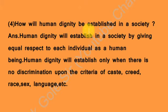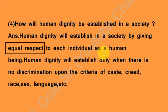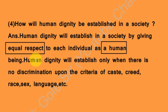Question number four: How will human dignity be established in a society? Human dignity will be established in a society by giving equal respect to each other. Each individual as a human being must be given value and respect. Human dignity is established when every citizen is respected and there is no discrimination on criteria of caste, creed, race, sex, language, etc.